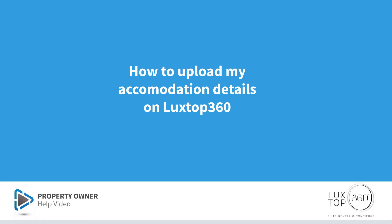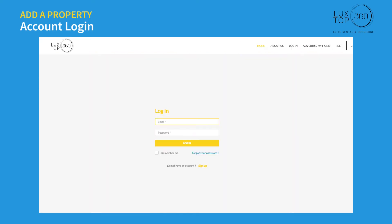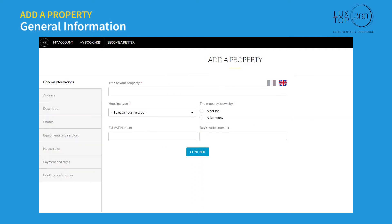How to upload my accommodation details on luckstop360. Log in to your account and click on the link 'Become a renter.' Choose rental mode or hospitality mode. Rental mode allows you to rent an entire accommodation to a single client, while hospitality mode allows you to rent rooms or beds to different clients within the same address.